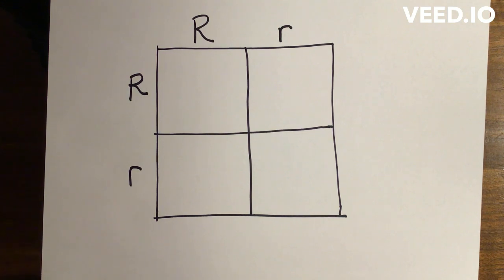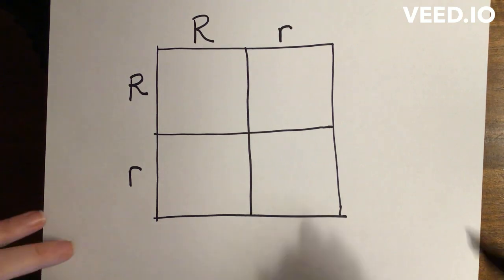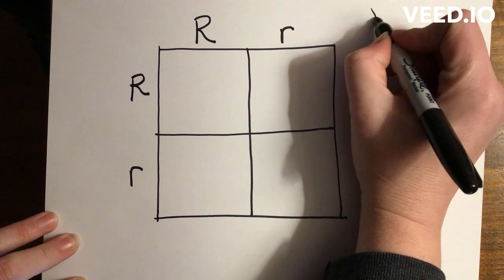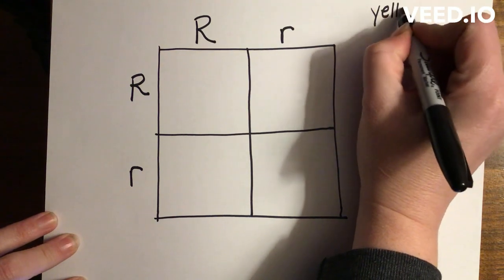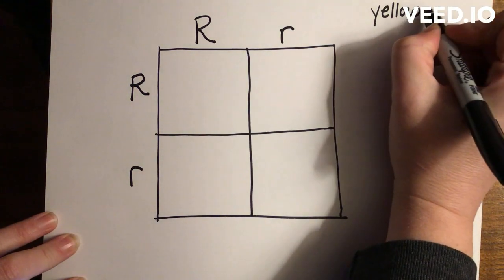Now I'm going to figure out the genotypes for the offspring. Although from this, I will also be figuring out the phenotypes. Remember, this is for pea color, so yellow peas are dominant.